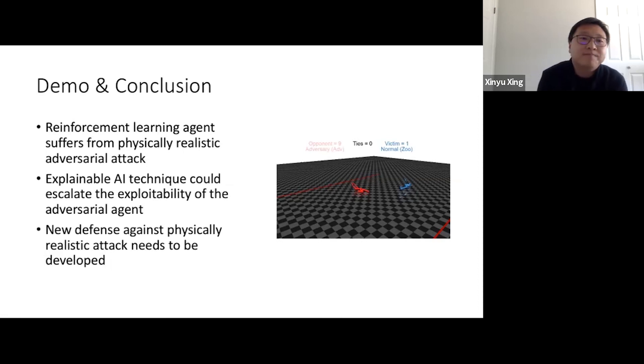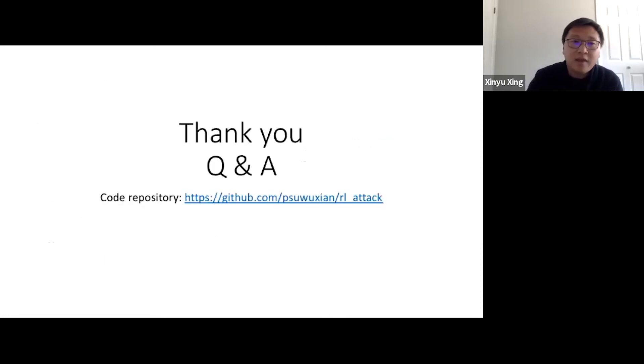Okay, to conclude this work, as I showed you, reinforcement learning agents suffer from physically realistic attacks. Using explainable AI, we can escalate the exploitability of an adversarial agent. Because physically realistic attack is new, therefore, we believe there is a strong need to develop a defense in the future. And that's all for my talk. Thank you very much. I am ready to take questions.